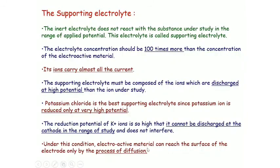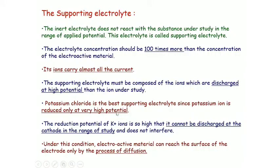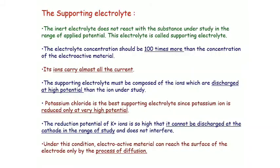Under this condition, the electroactive material can reach the surface of the electrode only by the process of diffusion. Initially, migration occurs by two ways: electrostatic force of attraction and concentration gradient. When a large excess of KCl is added, it carries almost all the current, but since the reduction potential of K⁺ is very high, K⁺ ions do not migrate to the electrode in the potential range under study. Therefore, the electroactive material can reach the cathode surface only by diffusion.